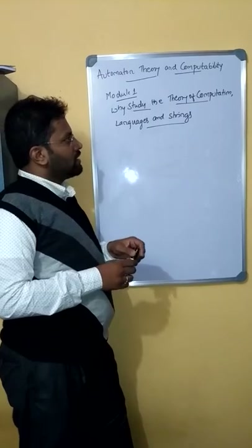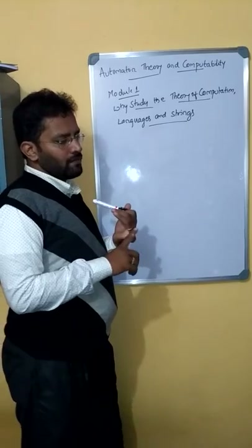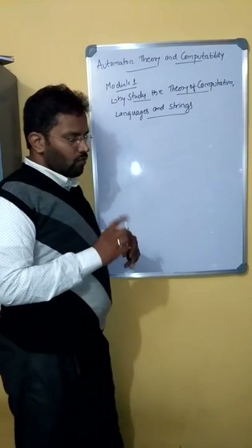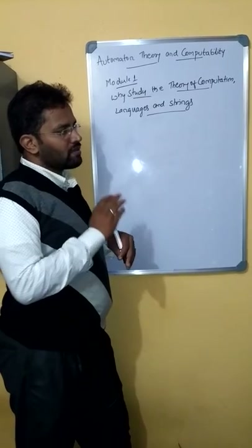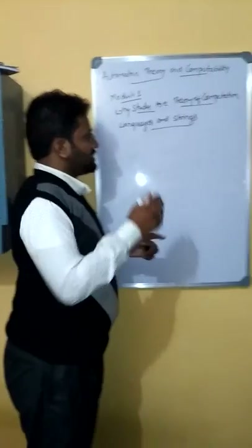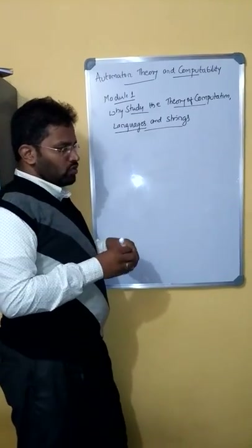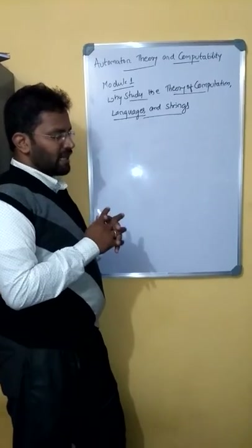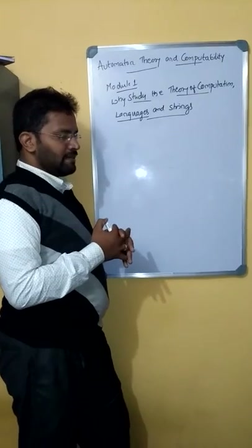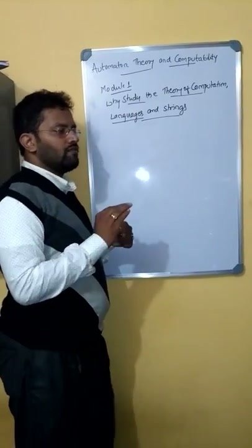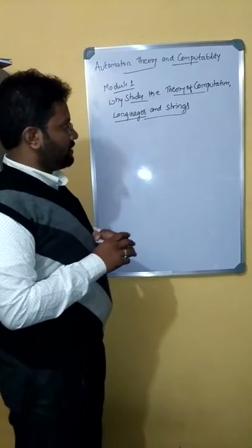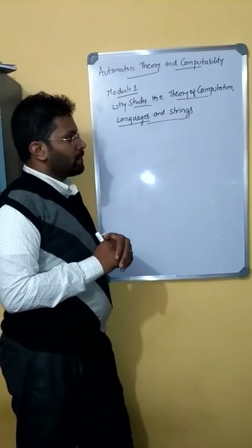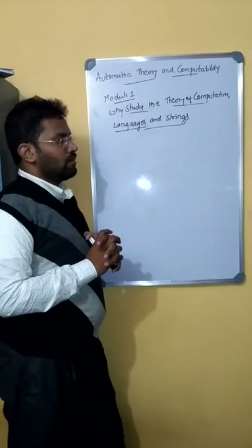In the last class I introduced the definition of automata, the language required for it, and grammar. Today, let me understand what exactly a language means and what the basic elements required for a language are. In module 1 we discuss the theory of language, what a string is, and we also discuss finite state machines.